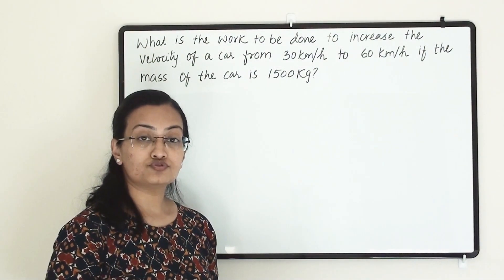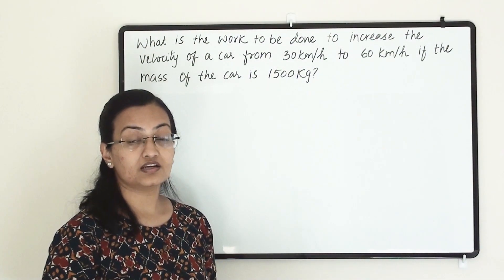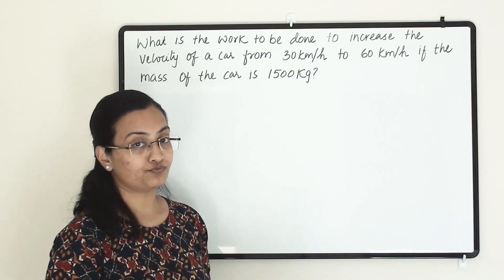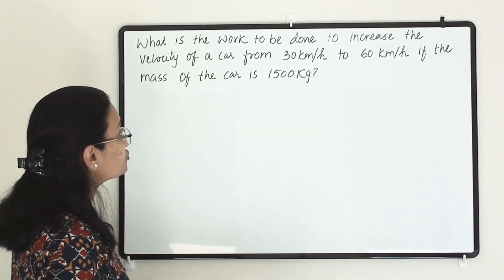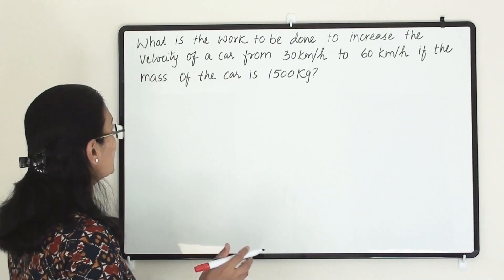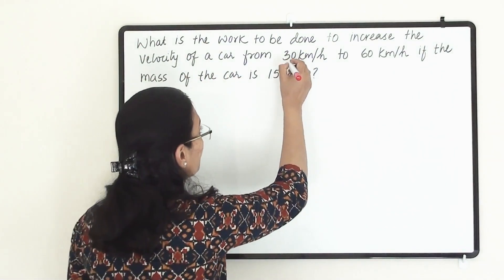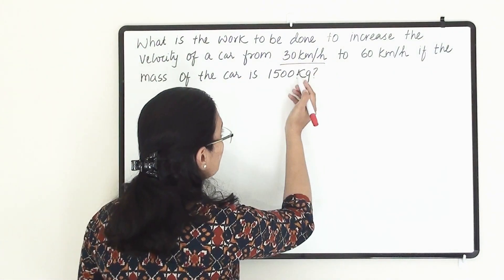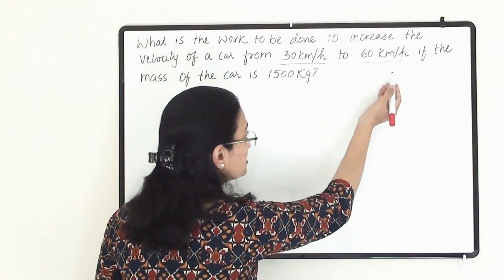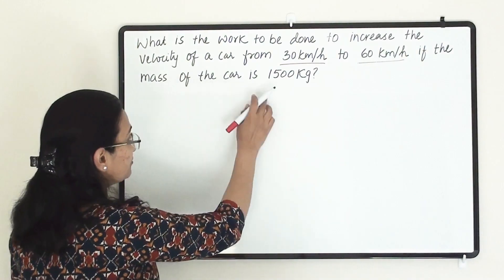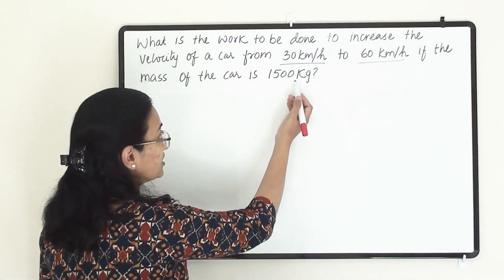Welcome to Learn Yourself. Today we are going to learn and understand solved example 11.4. This example says: what is the work to be done to increase the velocity of a car from 30 km per hour to 60 km per hour, if the mass of the car is 1500 kg?